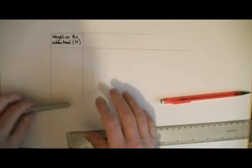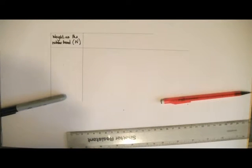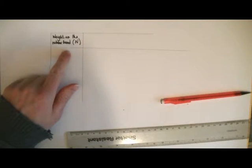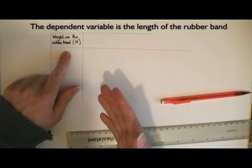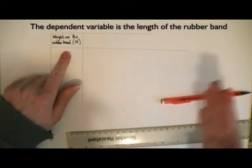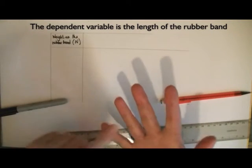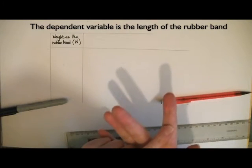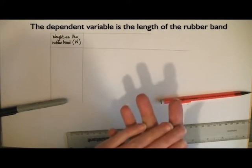Now I can think about how I'm going to record my dependent variable. And for each value that I choose for the weight, I'm going to measure the length of the rubber band three times and then take an average. So, that means I need three columns for the three different measurements and another column for the average. That's another four columns.